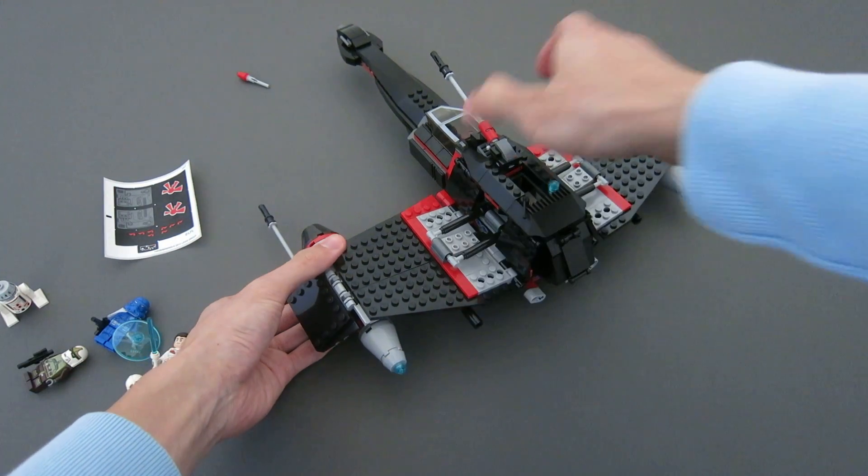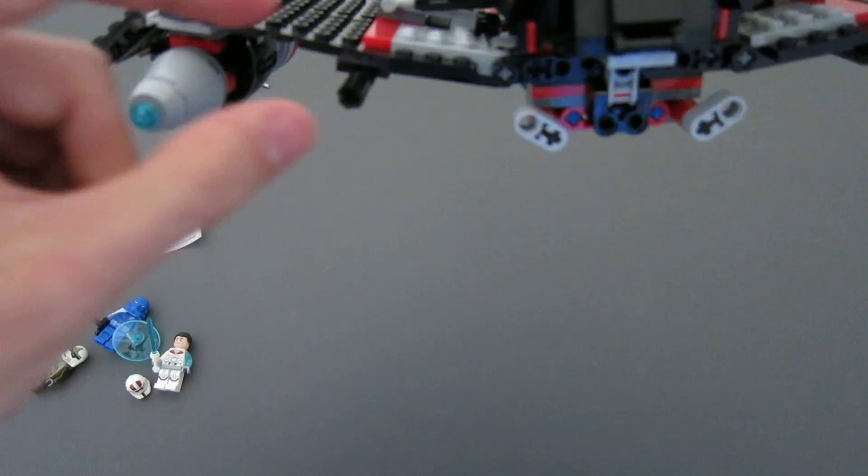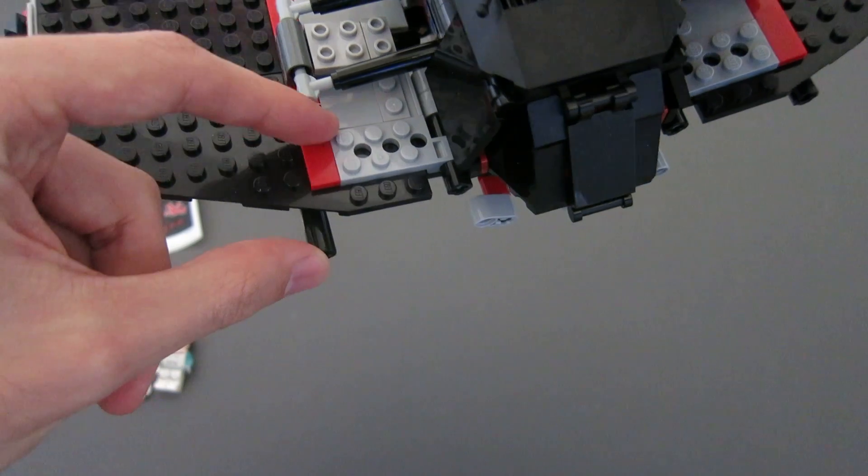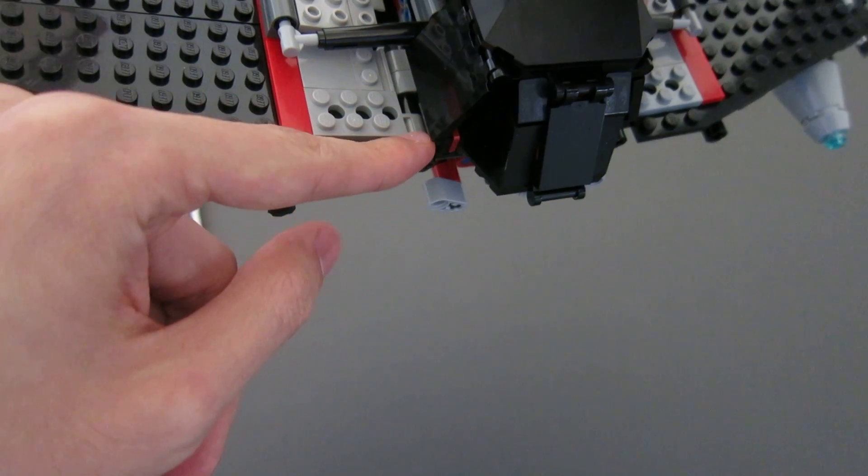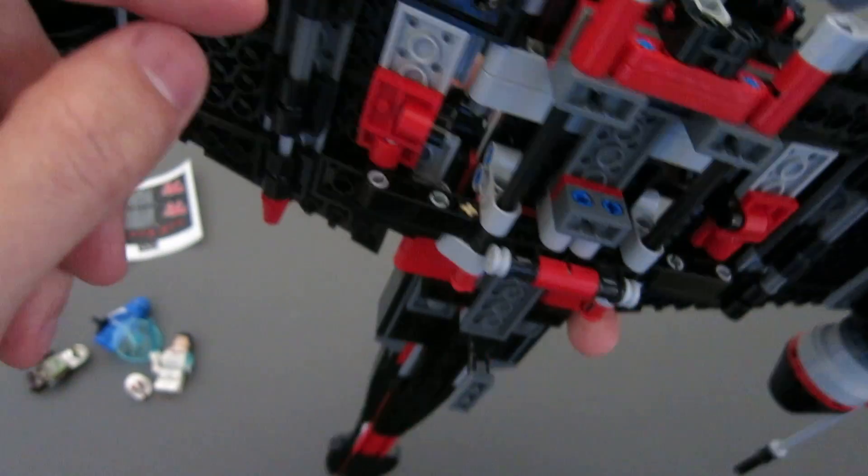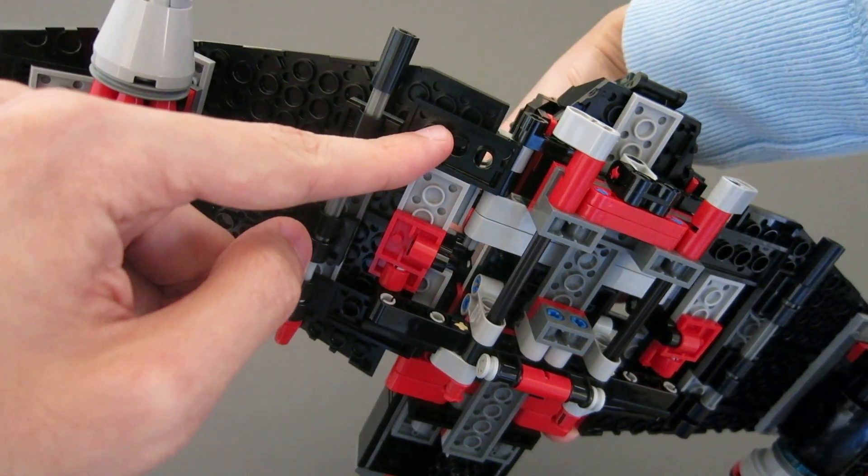Other than that, there are these hinges here, the plate hinges. You can see this is a one-by-four plate with a hinge on the very end, and then that connects to a black version of it on the bottom, this piece right here.